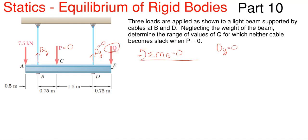Well, really the only thing that we have in our moment equation then is if P is 0, DY is 0, and we are summing about point B so it drops out of our moment equation, we really only have the 7.5 kN Q to worry about.